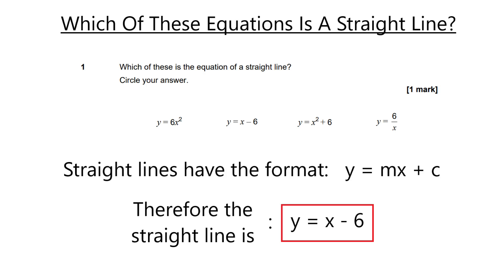As for the other equations, we've got y is equal to 6x squared. And then in terms of the other one, which has an x squared, which is y is equal to x squared plus 6. These both have x squareds in them. It's not in the right format. It's not in the format of a straight line.